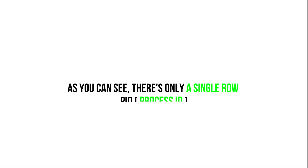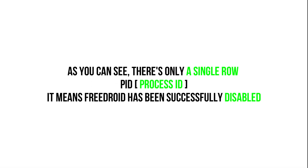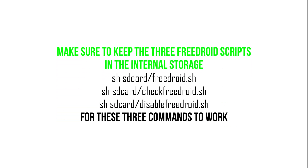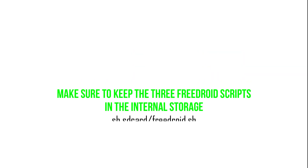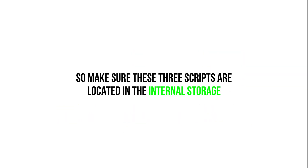As you can see, there's only a single row of process ID. It means FreeDroid has been successfully disabled. Make sure to keep the three FreeDroid scripts in the internal storage for these three commands to work.